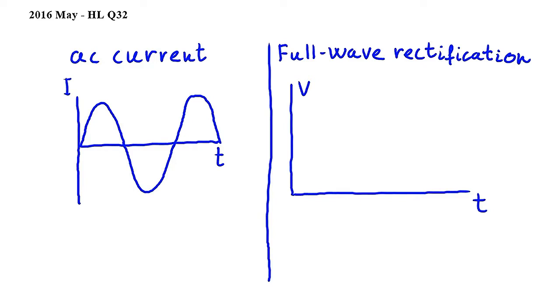In this question we have a full-wave rectification circuit. The period of the sinusoidal input signal is 6.3 milliseconds, and we have to choose the correct potential difference time graph.